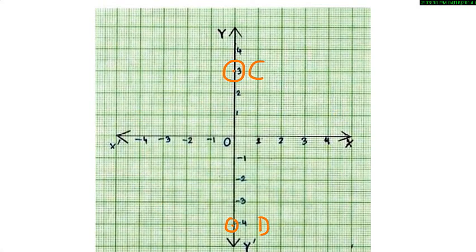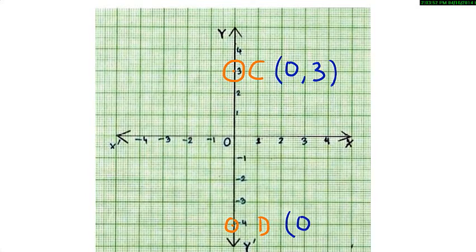Look at these points in the given figure. The point C has not moved from the y-axis but it has moved 3 units above the x-axis, so its x-coordinate is 0. Similarly, the coordinates of the point D are (0, -4). Any point on the y-axis has its x-coordinate as 0. Therefore, the equation of the y-axis is x = 0.